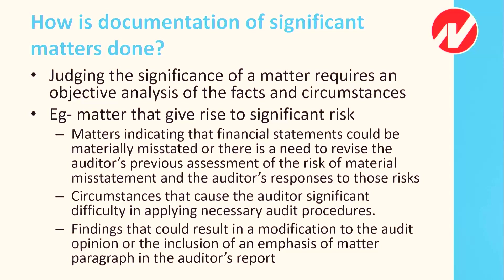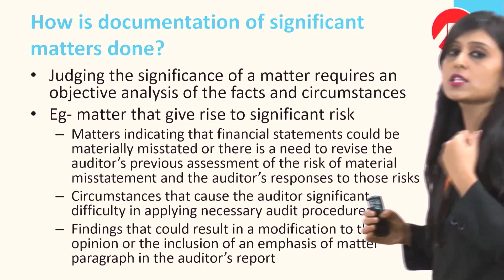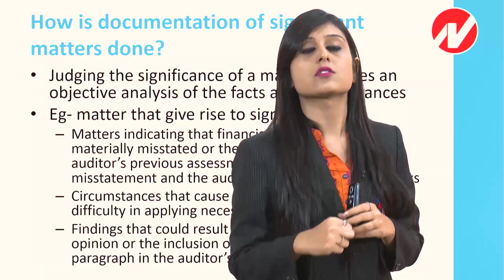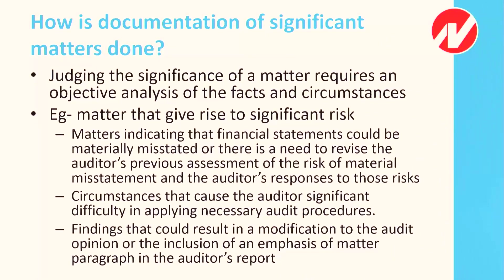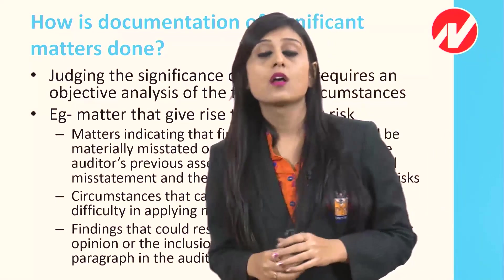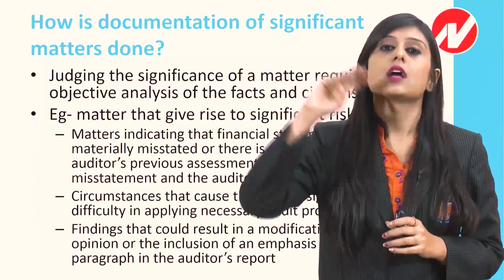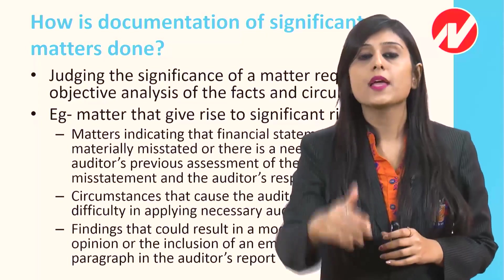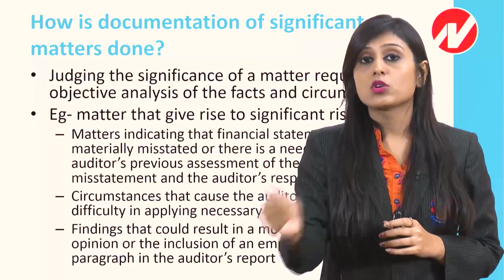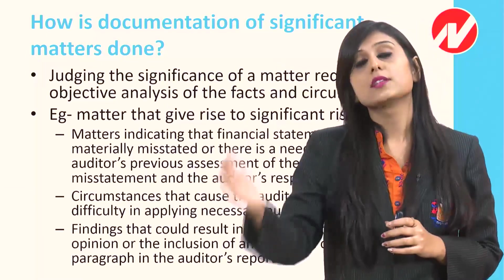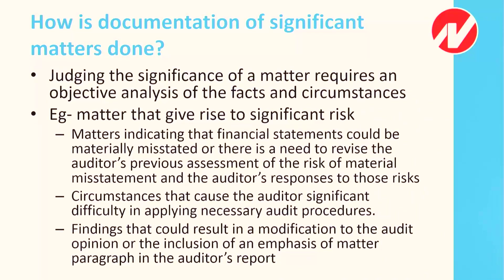Second example: circumstances that cause the auditor significant difficulty in applying necessary audit procedures — situations where you are not able to carry out your audit procedures. There might be some risk in that area. Third example: findings that could result in a modification to the audit opinion or the inclusion of an emphasis of matter paragraph in the auditor's report — if we have found things that require issuing a qualified, disclaimer, adverse opinion, or an emphasis of matter paragraph, that misstatement is significant for us. All of this is determined only after looking at the facts and circumstances, and this is an example of significant risk.